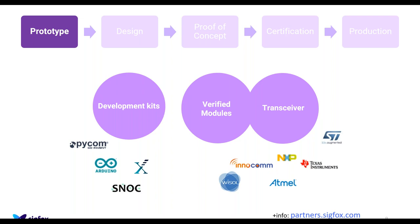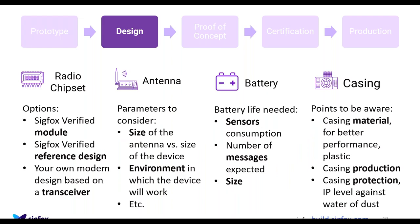Using a module will be better in terms of integration and final results, and your prototype will be more similar to the final device. If you're in an early stage of your idea, go for a dev kit — there are multiple dev kits on the market with different sensors like temperature, light, and magnet, and with different technologies like Bluetooth Low Energy, Wi-Fi, and GPS. If the idea is more mature, working with verified modules or transceivers is the better approach.